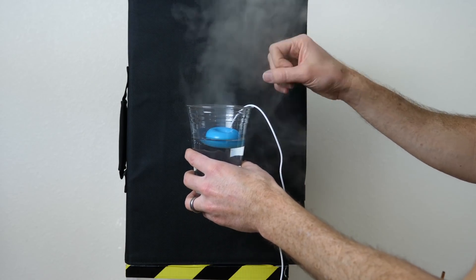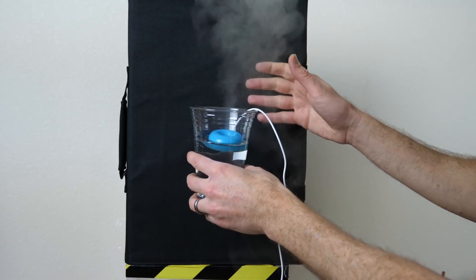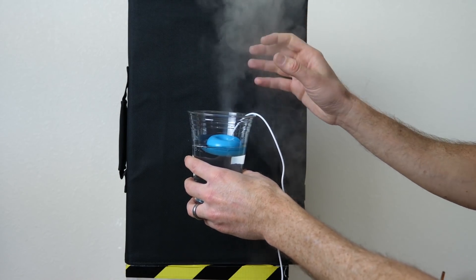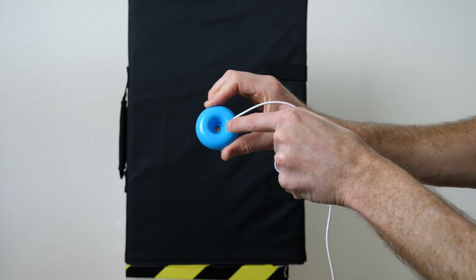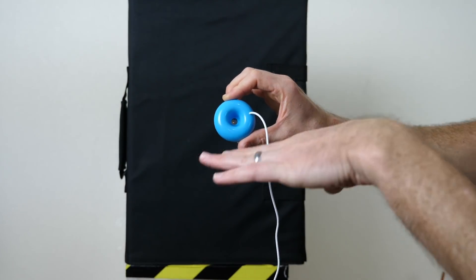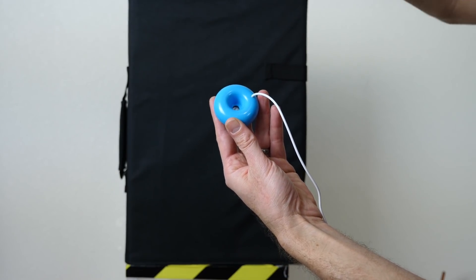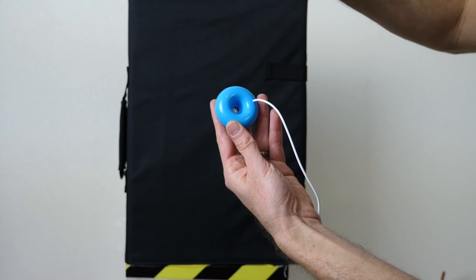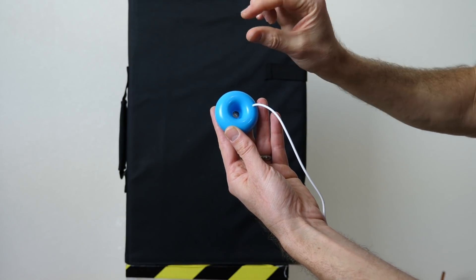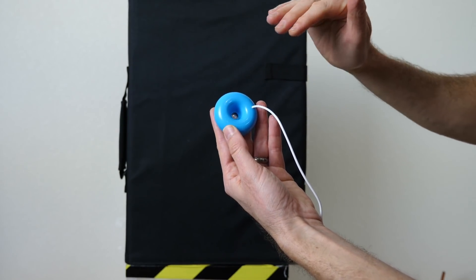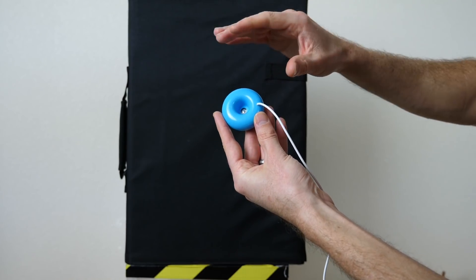So the humidifier works by atomizing the water. And that doesn't mean that it's actually making it into individual atoms. But what it is, is in the center there's an ultrasonic disc that vibrates rapidly. And it moves so fast that the water doesn't have enough time to go up and down with the disc. And so when it moves down it creates a tiny little vacuum within the water. And so it essentially cavitates the water.